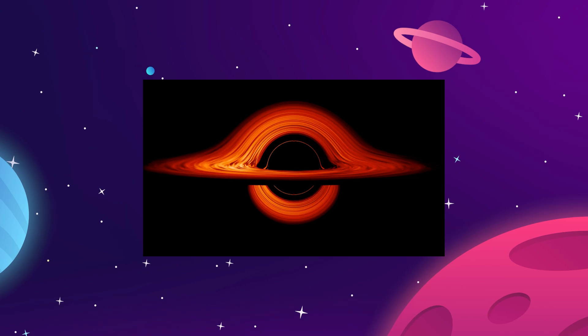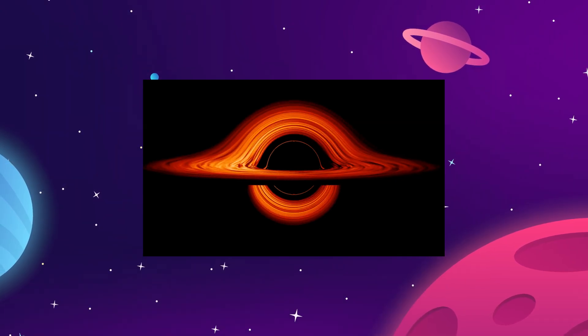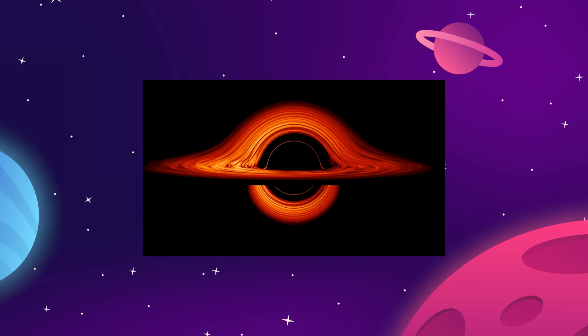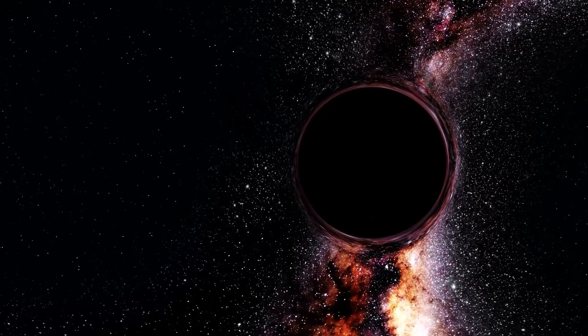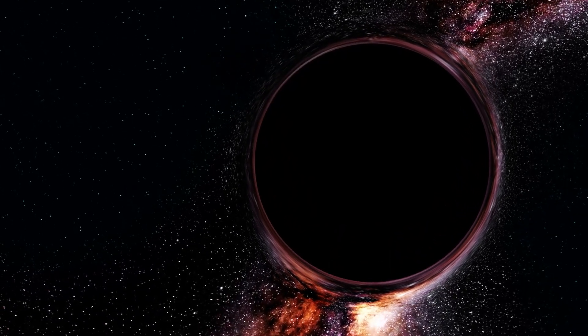So because of this gravitational lensing effect, we can actually see light that is coming from the other side of the black hole. Not to be confused with the inside of the black hole though. We'll get to the inside. It's like a big trippy space mirror.